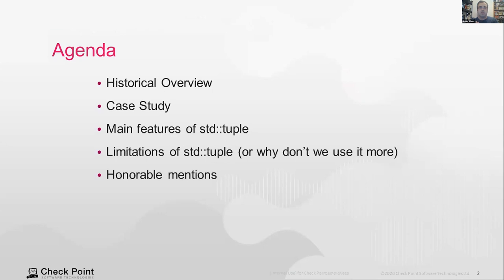Okay, so I'll do a quick historical overview just to make sure we're all on the same page. And I'm going to start with a case study, because I think seeing an actual example is usually the best way to get into a topic. Then I'm going to go over the main features of std::tuple. Not all of them, because even though it's a relatively small data structure, there's still too much to be covered in just one go.